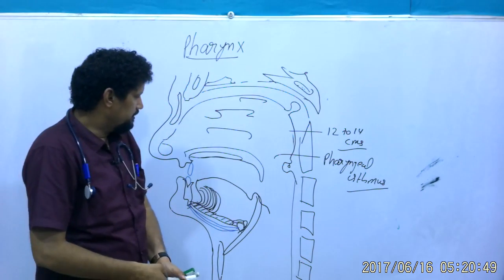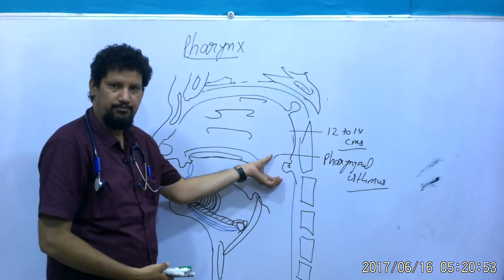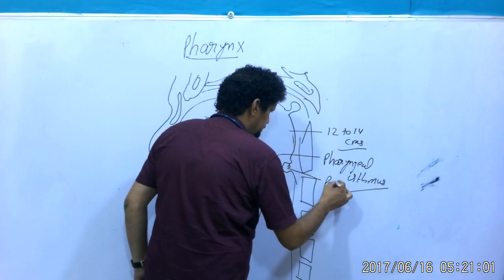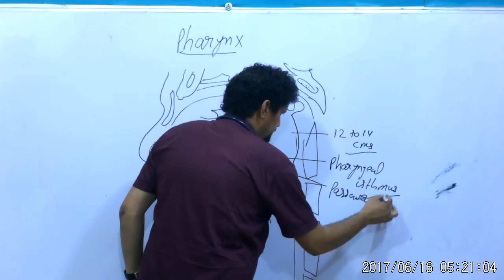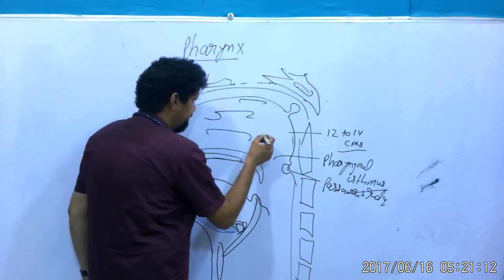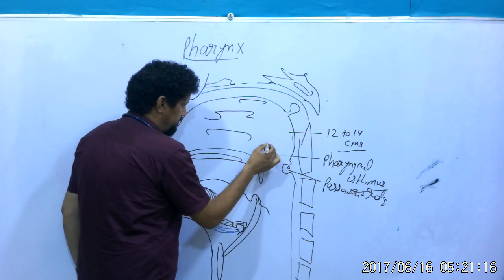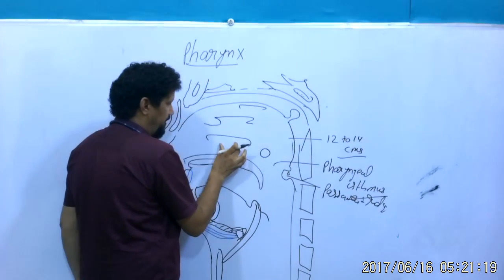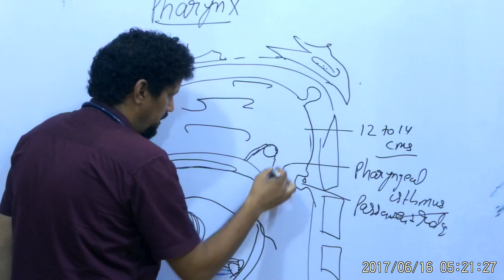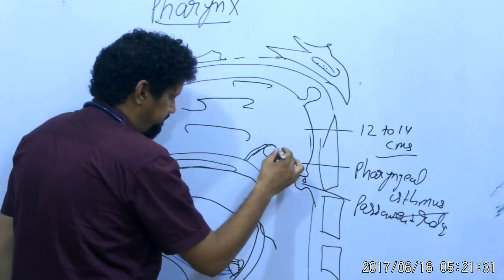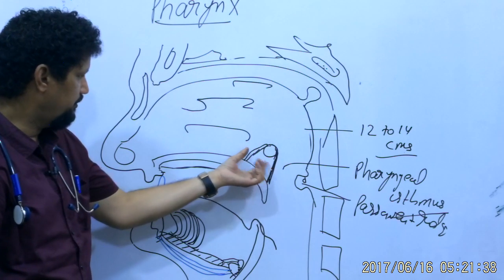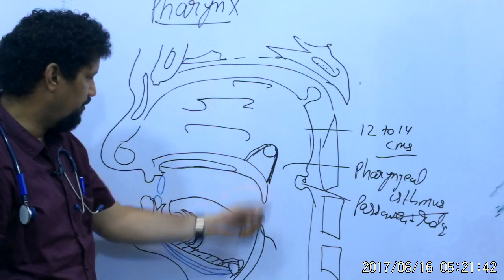The pharyngeal isthmus plays a key role during swallowing and blowing from the mouth. There is a ridge known as Passavant's ridge, formed by the posterior descending fibers of the palatopharyngeal muscle. Located 1.2 centimeters behind and slightly below the posterior part of the inferior nasal concha is the opening of the auditory tube, also known as the tympanopharyngeal or Eustachian tube.